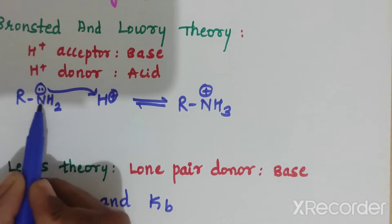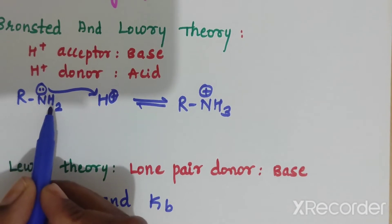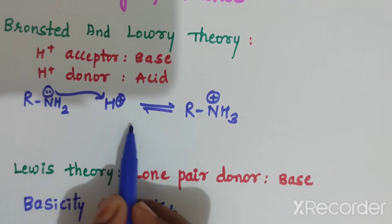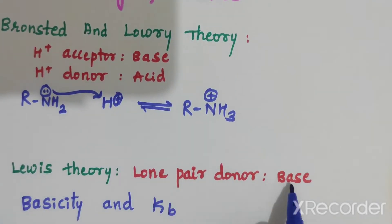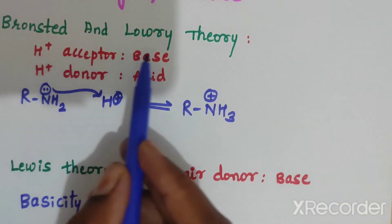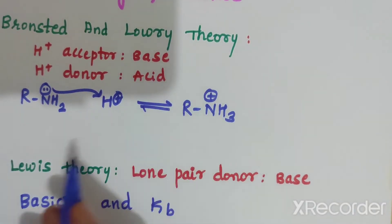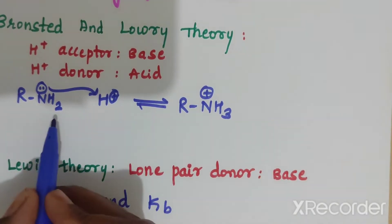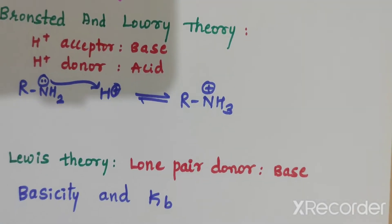Here, R-NH2 is donating electrons to the proton. Hence it is acting as a base. According to Bronsted-Lowry theory, amines are bases.